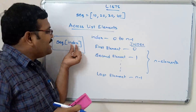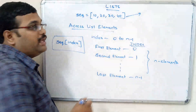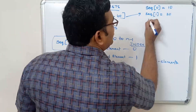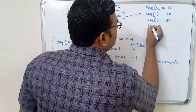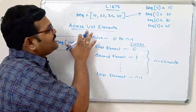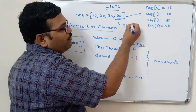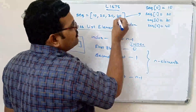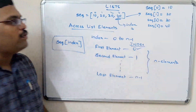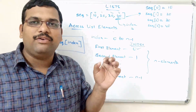To access a particular element, use sequence[index]. For example, if sequence = [10, 20, 30, 40], then sequence[0] = 10, sequence[1] = 20, sequence[2] = 30, sequence[3] = 40. The index always starts from 0, so the fourth element has index 3, the fifth has index 4, and the nth element has index n minus 1.